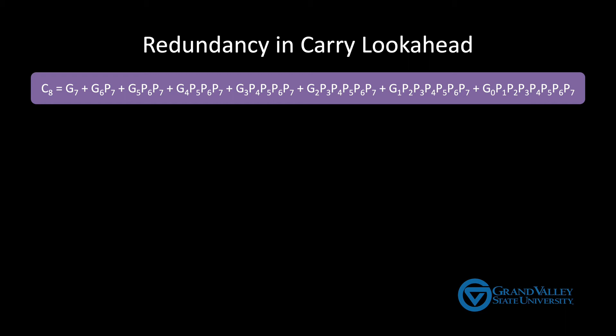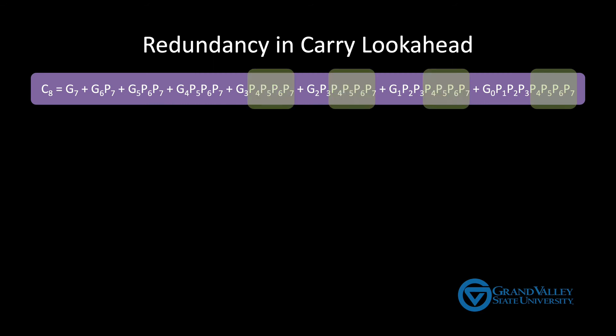Notice the redundancy in this expression. For example, we compute the AND of P6 and P7 six times. Similarly, we compute the AND of P4 through P7 four times. If we build large AND gates as a tree of two input AND gates, as shown in video 14, then the rightmost product looks like this. Similarly, the next term to the left looks like this.